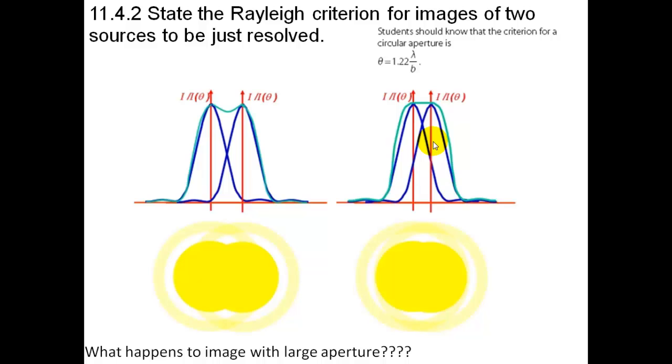And the rule is basically this: if the peak, the central peak from one, coincides with the first minimum of the second image, then they will just be able to be resolved. Here you can see that the sum of the two images, there's a little bit of a dip there. So you would see one source which is bright, the next is bright, and it will be a bit dimmer in between. You can't actually see it on this there.